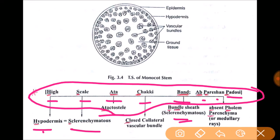Ab for absent - what is absent? P for phloem. Phloem is absent. And again P for parenchyma, and these parenchyma are also called medullary rays.